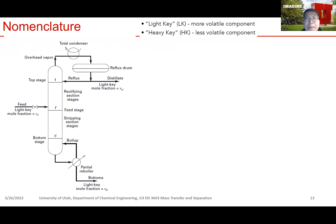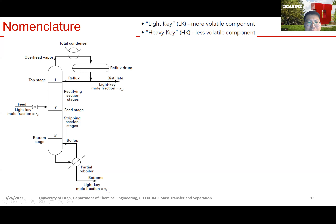Before we go ahead with the equations, let's look at some of the nomenclatures — how we define the parameters. Here is a schematic of the distillation column. We have a feed that contains a light key with a mole fraction of Zf. Light key refers to the more volatile component in this binary mixture, and heavy key refers to the less volatile component. We're going to use the mole fraction of the light key to denote the composition of the feed, the distillate, and the bottom, respectively as Zf, xd, and xb. We're feeding at the feed stage F.